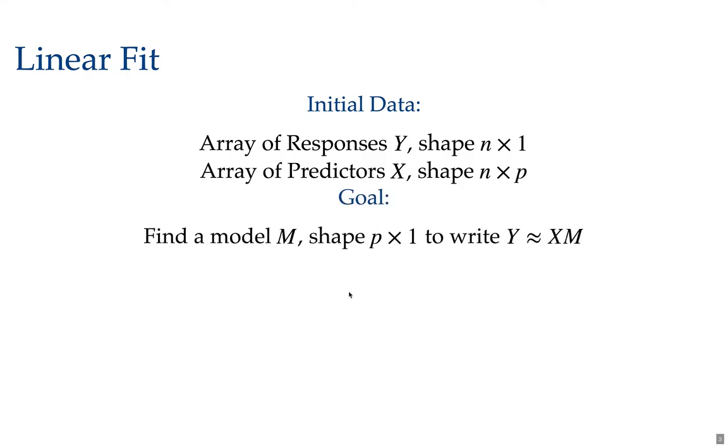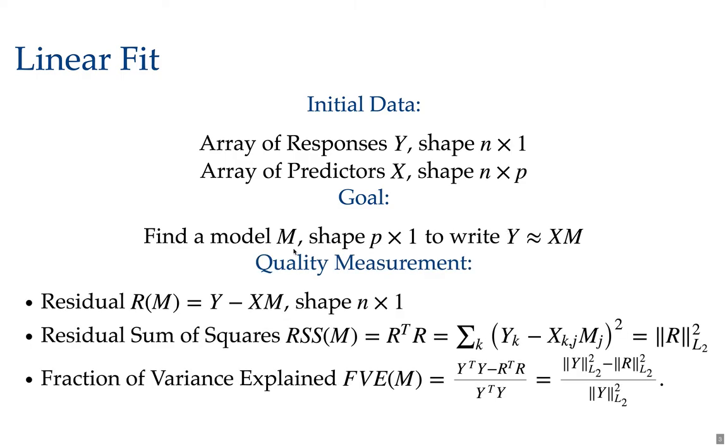The goal is to find a linear model, which is really p coefficients, where y is approximately x times M. That's our linear model. You should know that we can measure the quality of a model using the residual sum of squares. The residual is the actual y value minus the predicted value xM. This gives us a vector in n dimensional space, one for each value entry. The residual sum of squares is simply the sum of the squares of those residuals. It's the L2 norm of the error between the actual and predicted values across your data set.